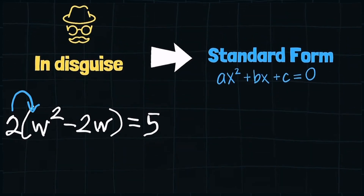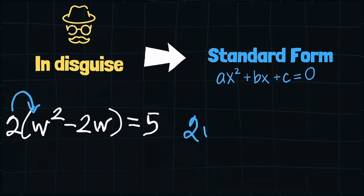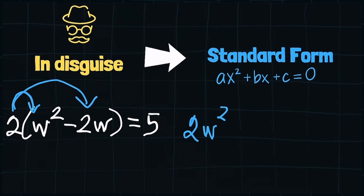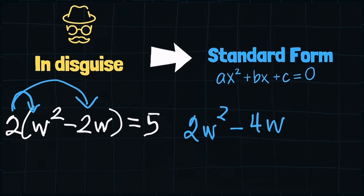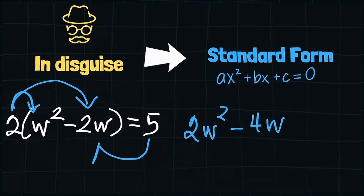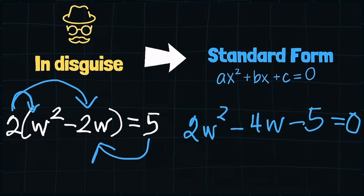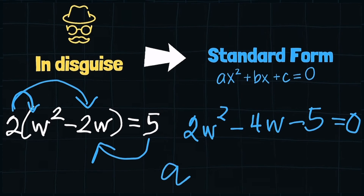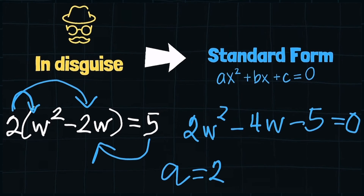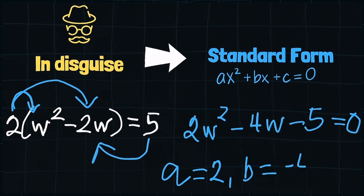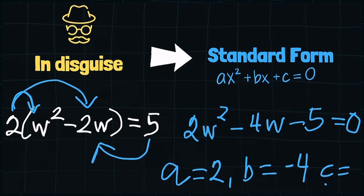Another example in disguise is this one. To transform it to standard form, we need to expand, or undo the brackets, and move 5 to the left. So we have 2w squared minus 4w minus 5 equals 0, where a is 2, b is negative 4, and c is negative 5.